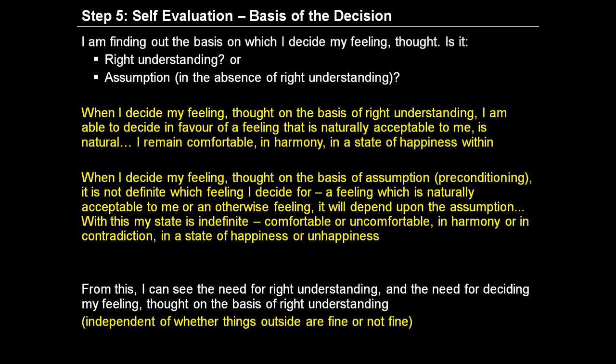So when I am deciding my feeling for this human being, I might have a right understanding about the human being or I might have an assumption about the human being. My feeling will be decided on the basis of my right understanding about myself and about this human being, or it may be based on my assumption about myself and my assumption about the other human being. If we have the right understanding of oneself and of the other human being, then we will always decide for a right, natural feeling in relation to that human being.